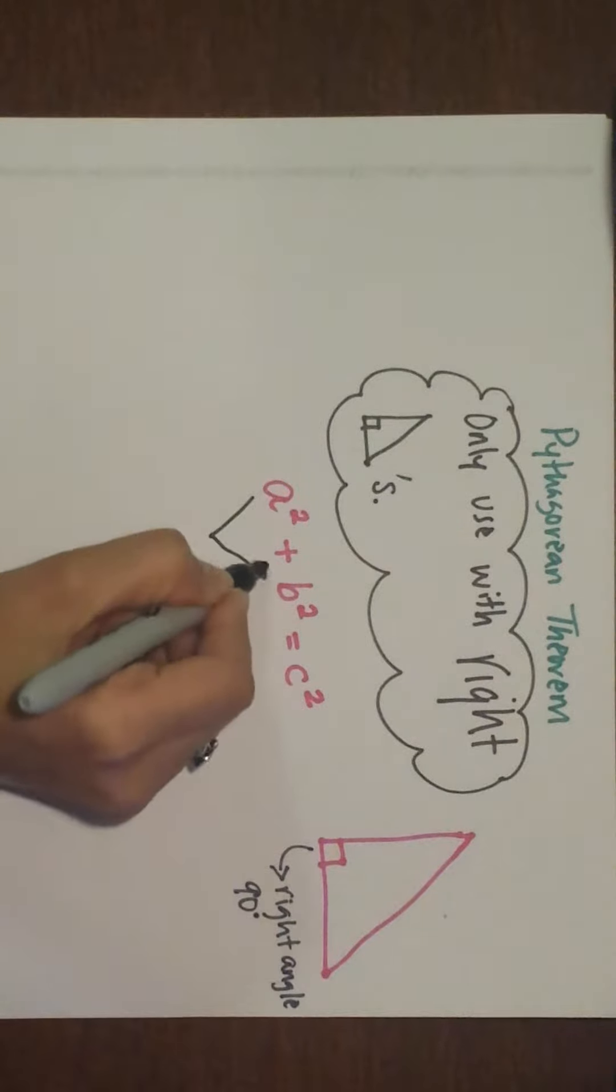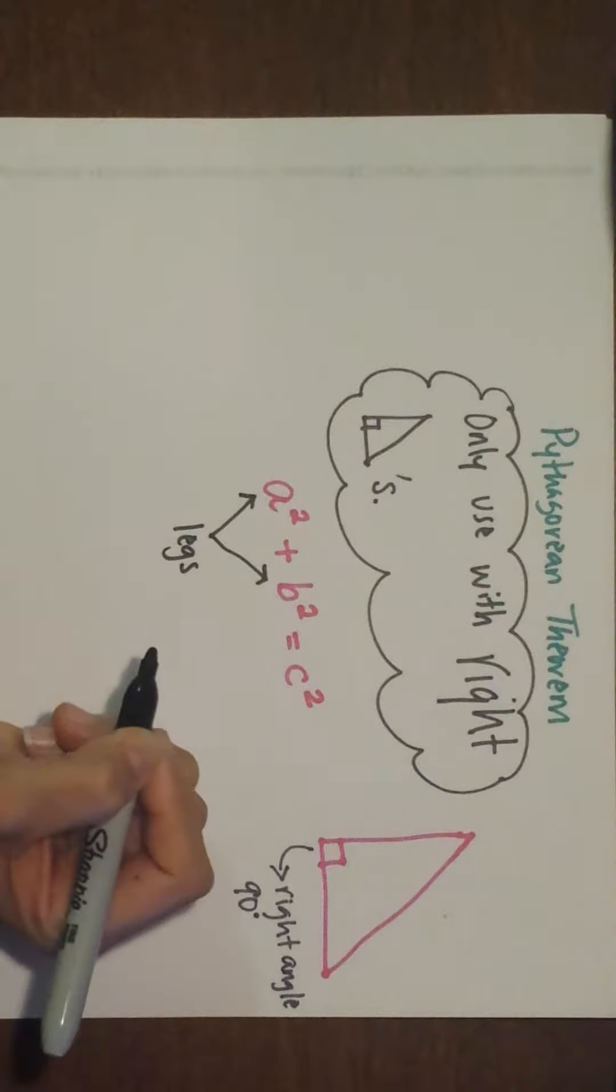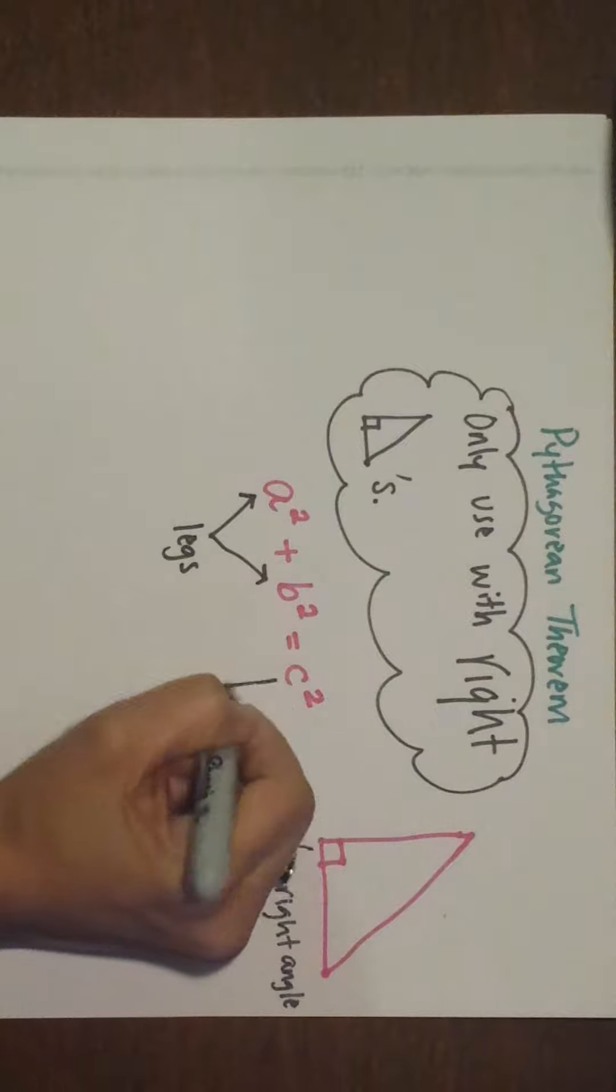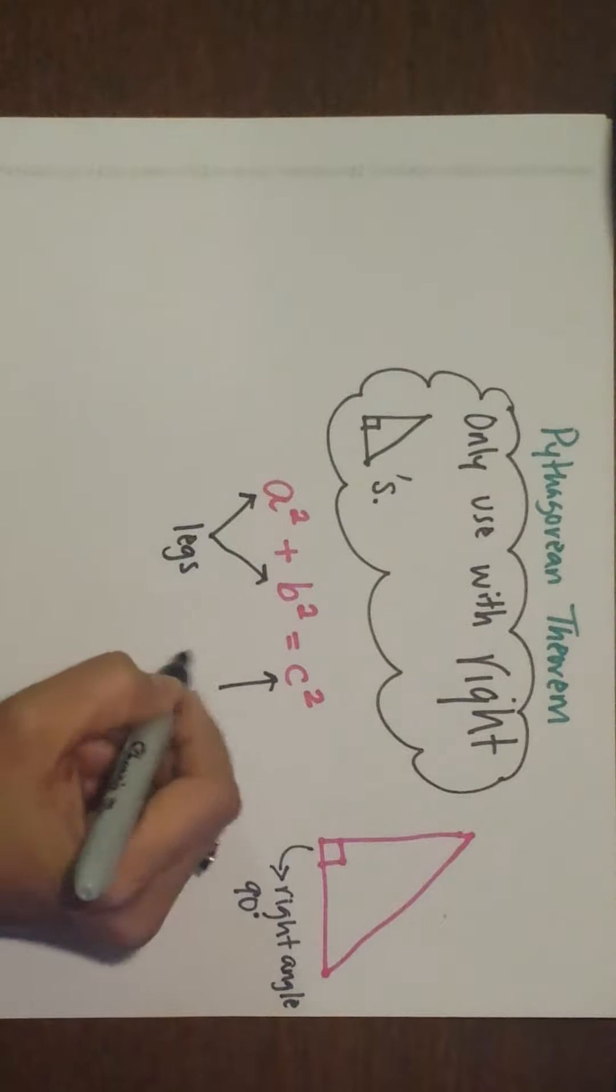A and b are called your legs. There are two of them because you have two legs. And then c is called your hypotenuse.